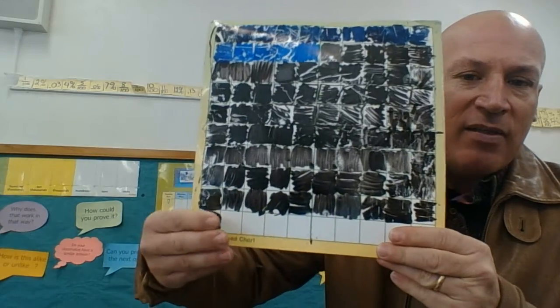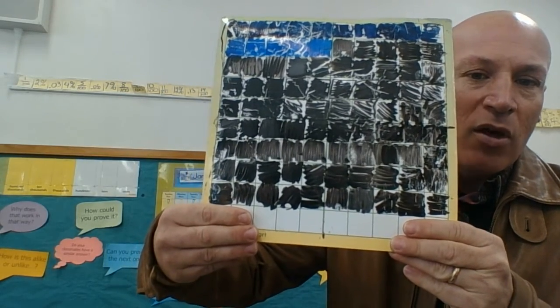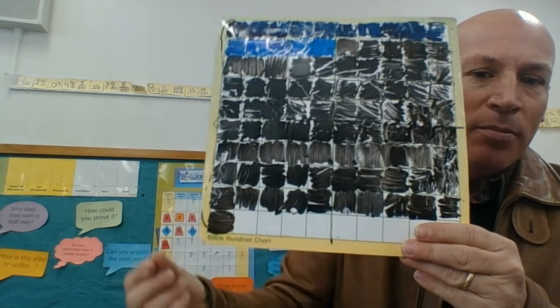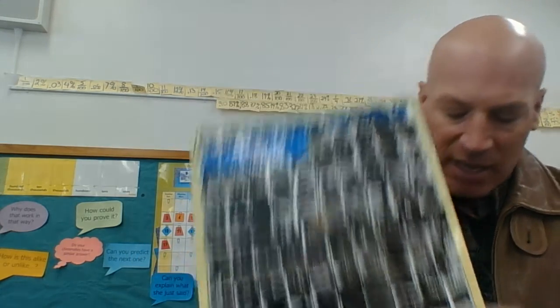Before we added this one one-hundredths, we had nine-tenths. And then, boom, now we add one one-hundredths, and so it's ninety-one-hundredths.